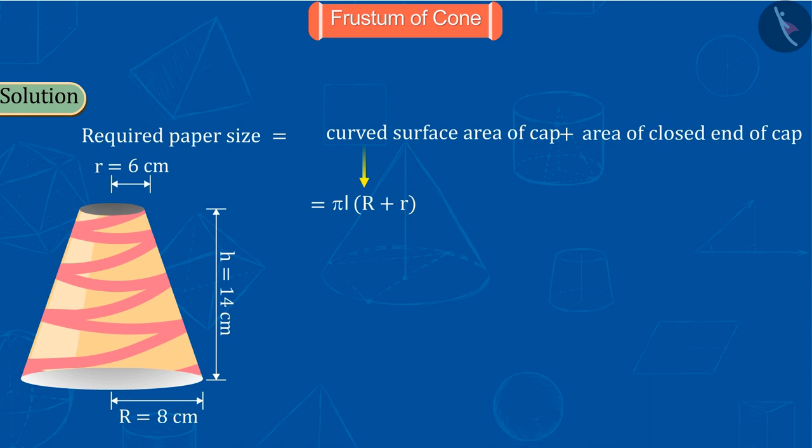Since the closed end of the cap is circular, here we will use the formula for the area of the circle. From the formula you can see that to find the curved surface area of the cap, we need its slant height, which is not given in the question.